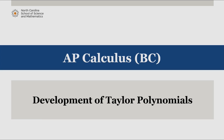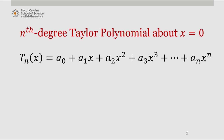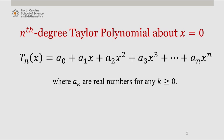We'll begin with the general form of our polynomial of interest. T sub n of x, meaning the nth degree Taylor polynomial, equals a sub 0 plus a sub 1 x plus a sub 2 x squared plus a sub 3 x cubed, all the way up to our nth degree term a sub n x to the n, where a sub k are real numbers for any k greater than or equal to 0.